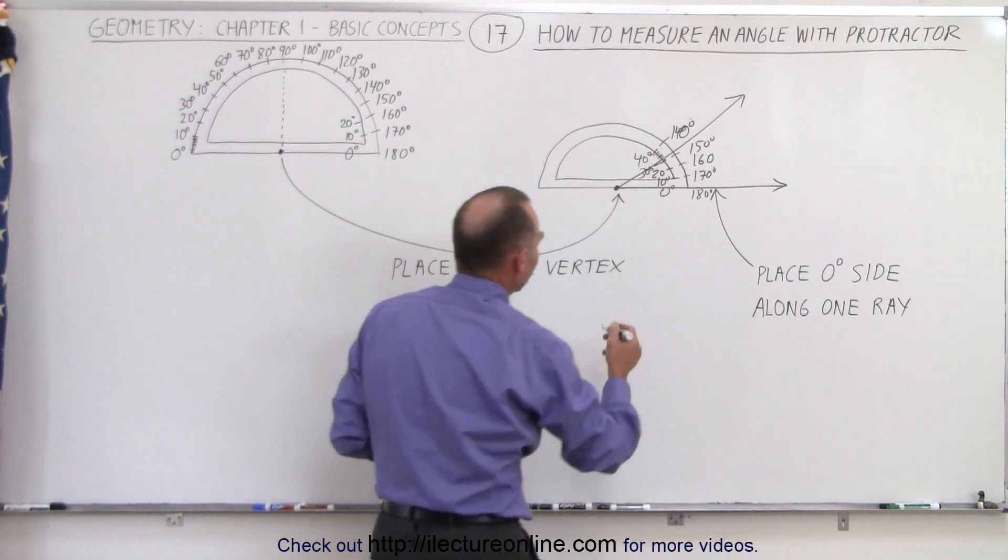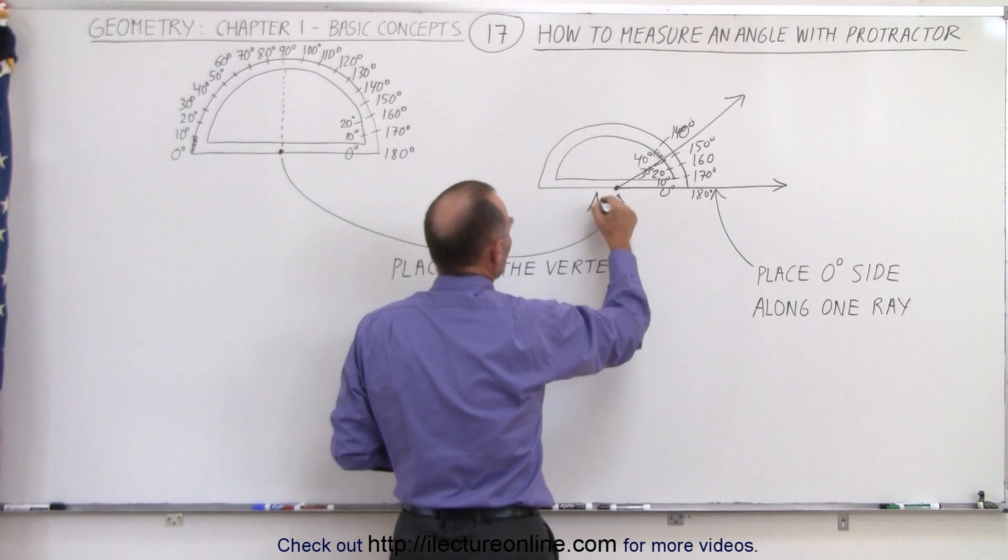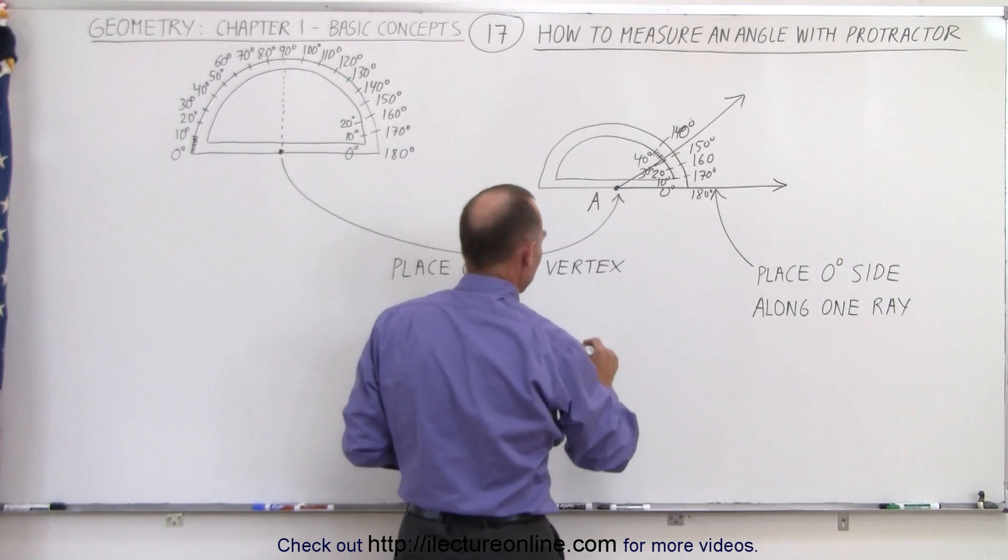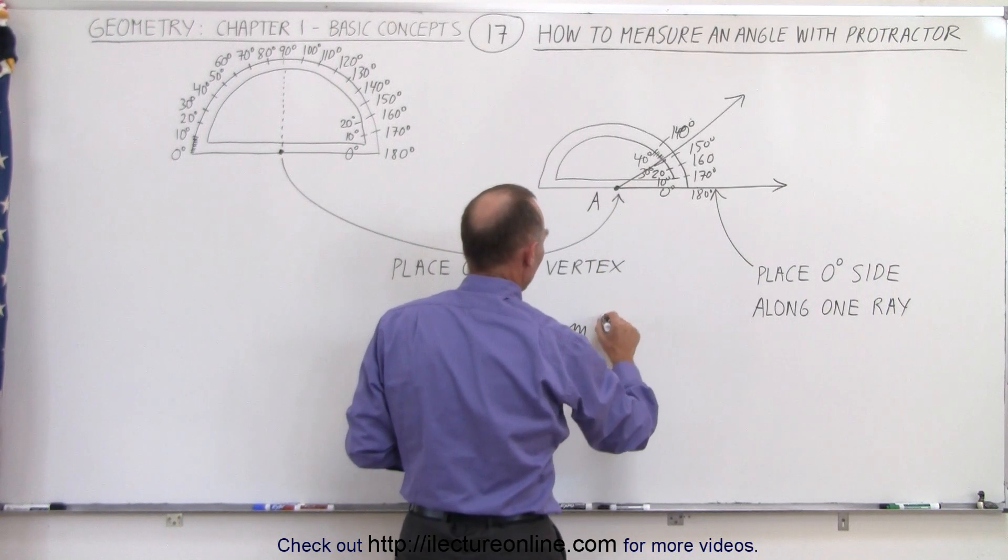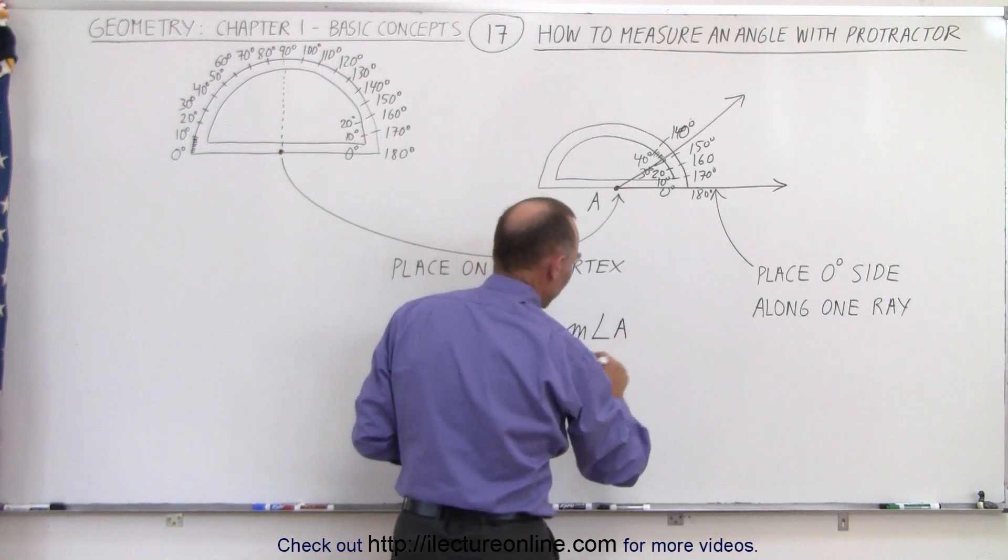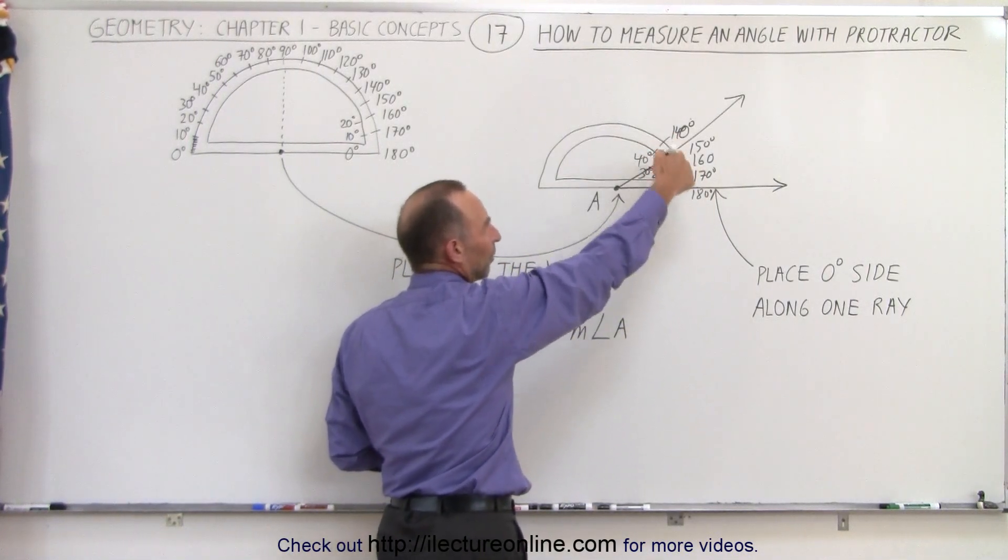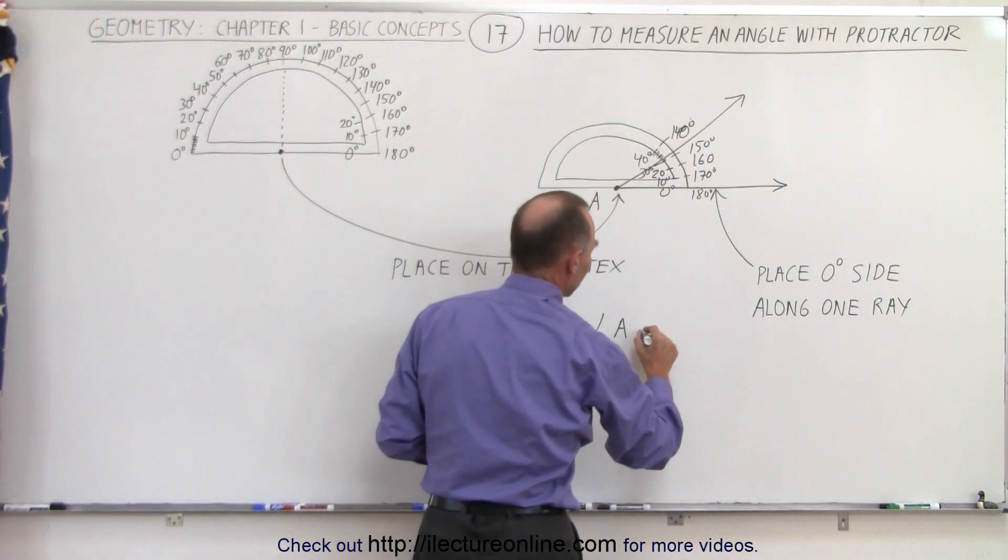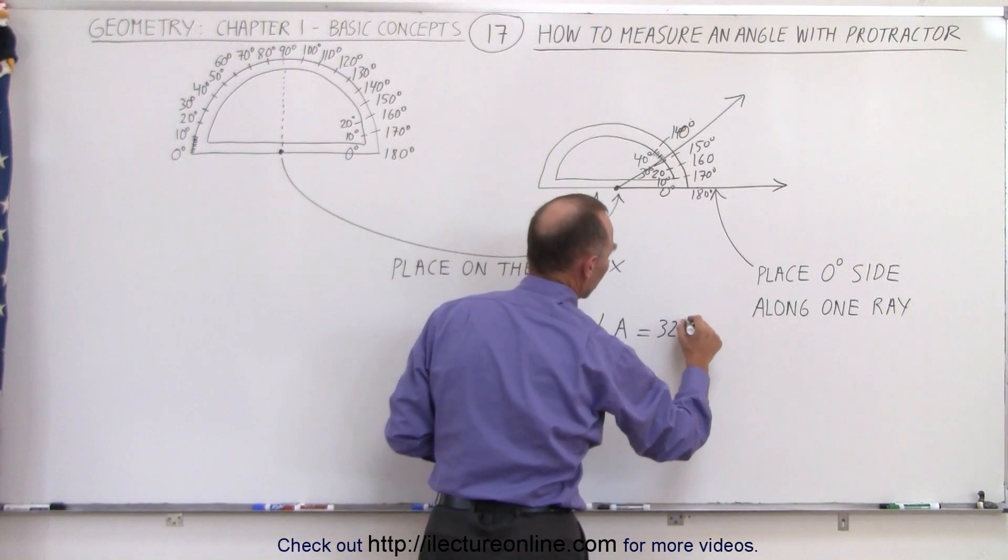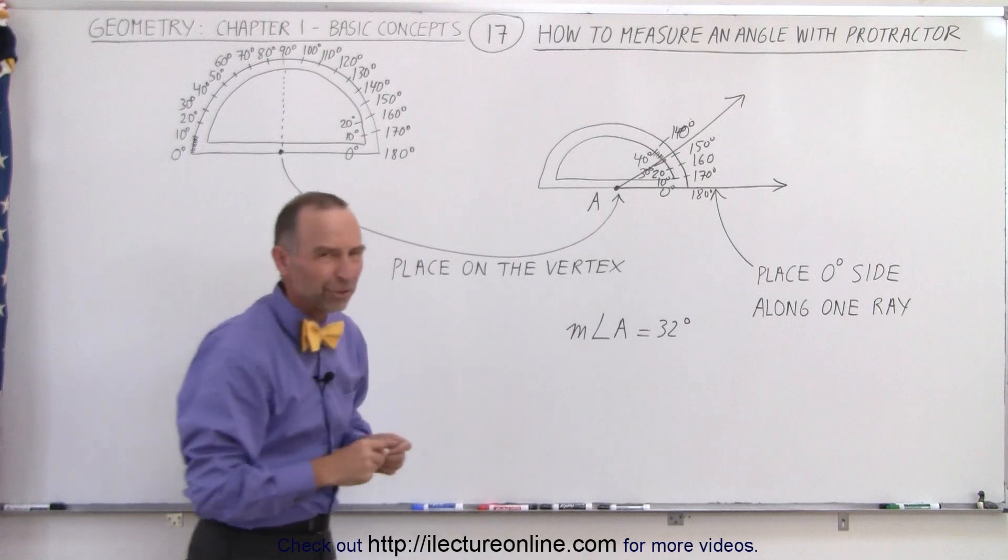So in this case, it looks like if we call this endpoint vertex A, then you can say the measure of angle A, and sometimes we can write it like this, if we don't have the other points on the rays, and we can say that that's equal to let's say 32 degrees, that's approximately that.